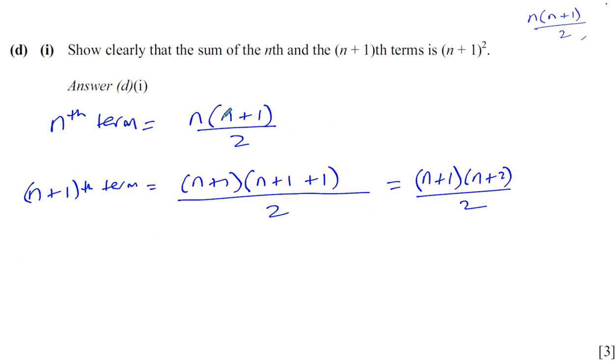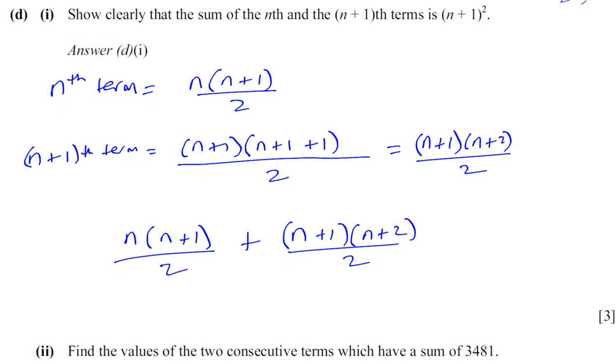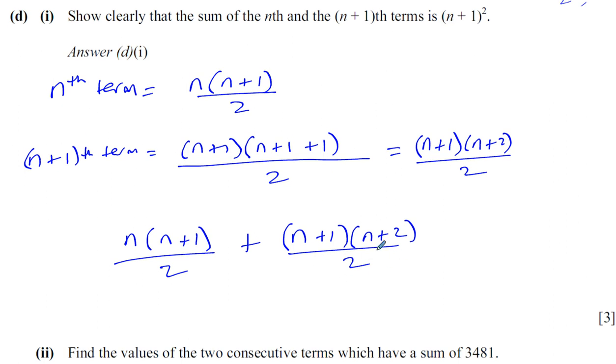Okay, so now, the sum of these two terms. So I'm going to have n times n+1 over 2, plus n+1 times n+2 over 2. Now, your problem might have been how to manipulate this. You could basically expand everything and then bring everything together. Or you could think of it in this way, let's try to factorize this.